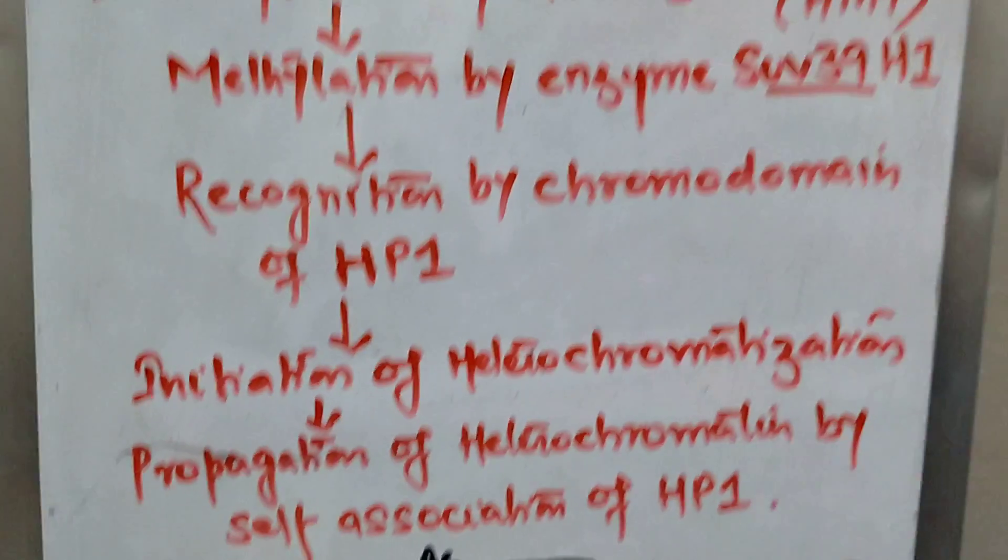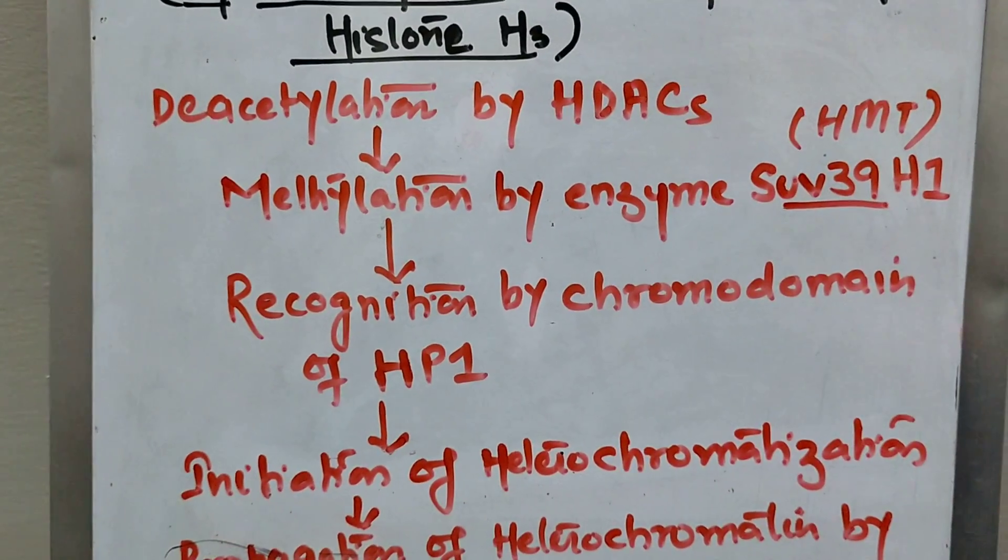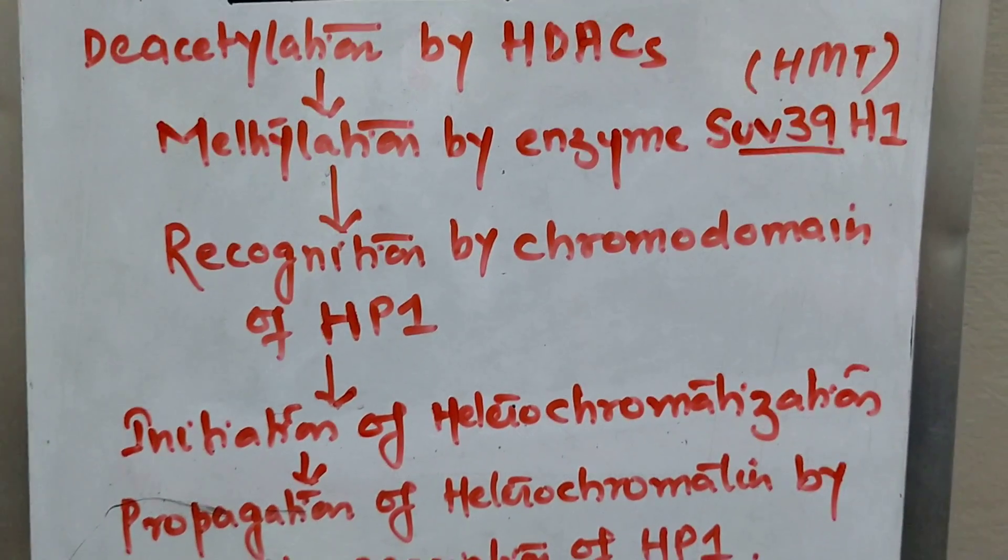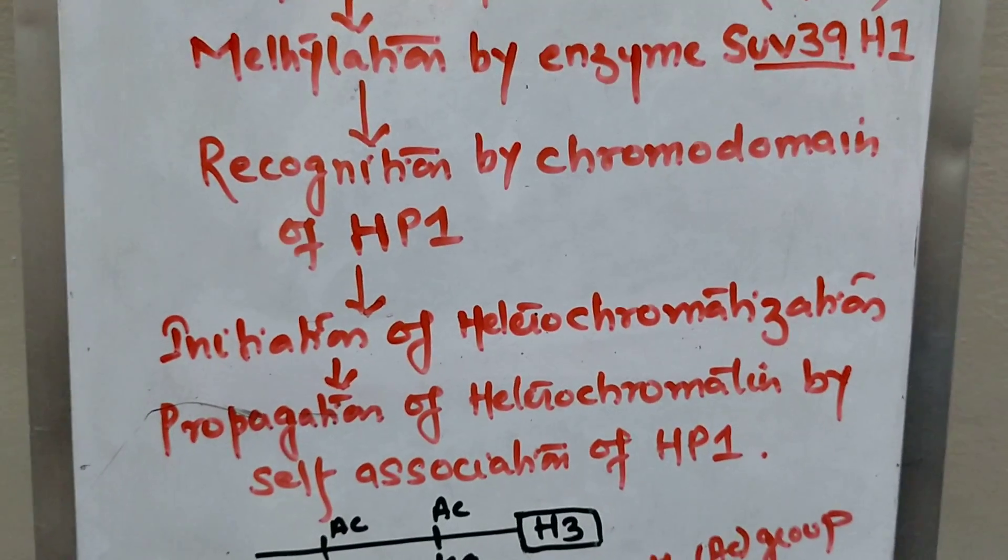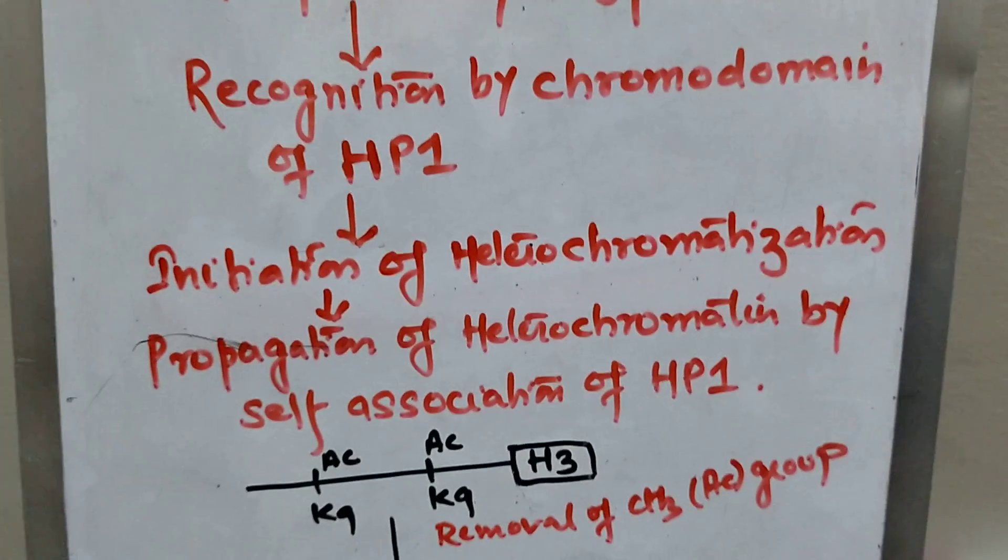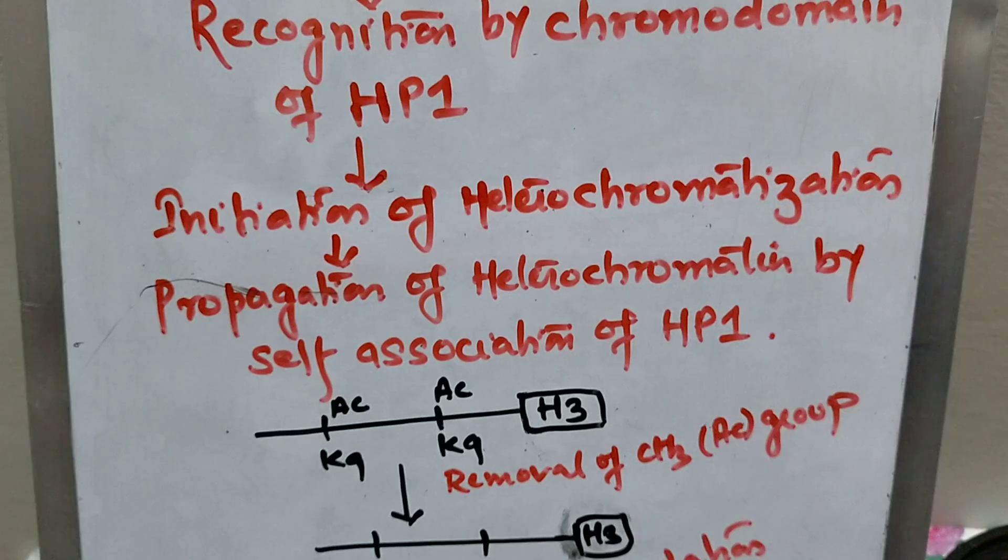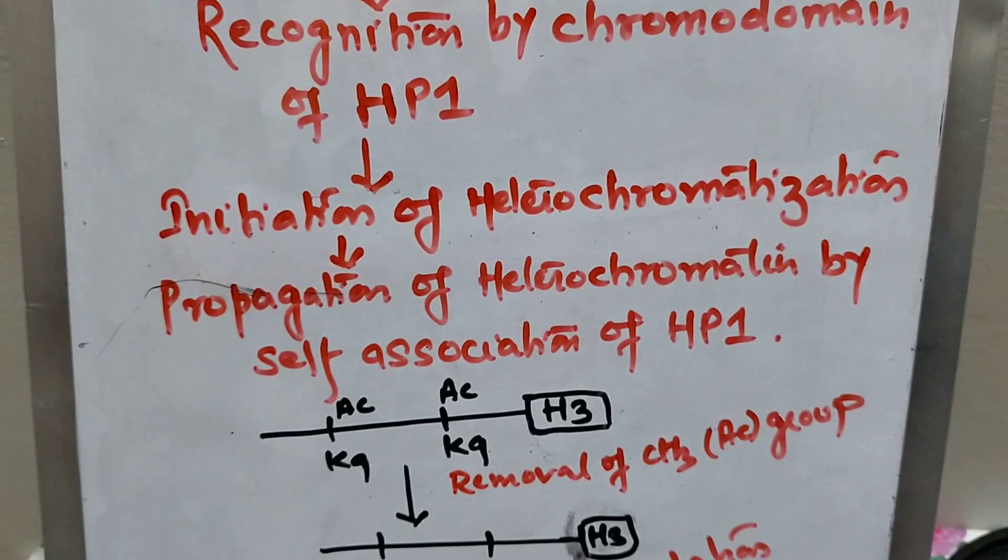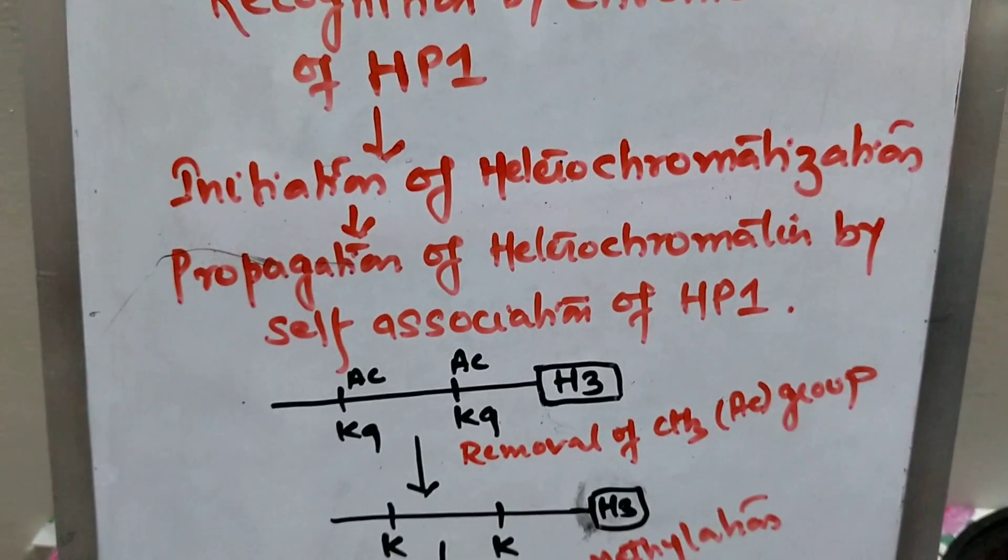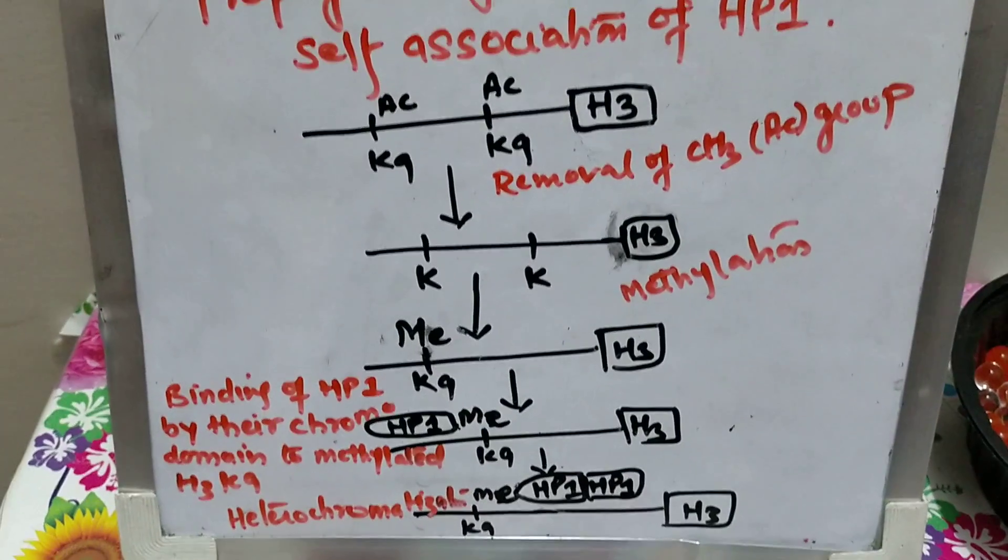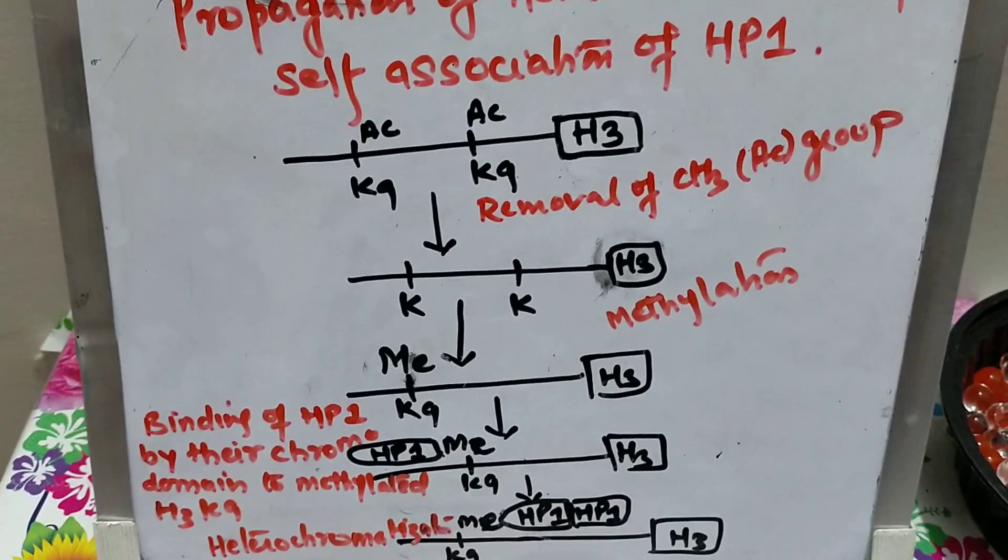So you can see once again, first step here is deacetylation by HDAC, then methylation by enzyme HMT, then recognition by chromodomain of HP1, then the initiation of heterochromatinization, then propagation of heterochromatin by self-association of HP1. You can see the diagram. I hope this much is clear. Thank you so much.